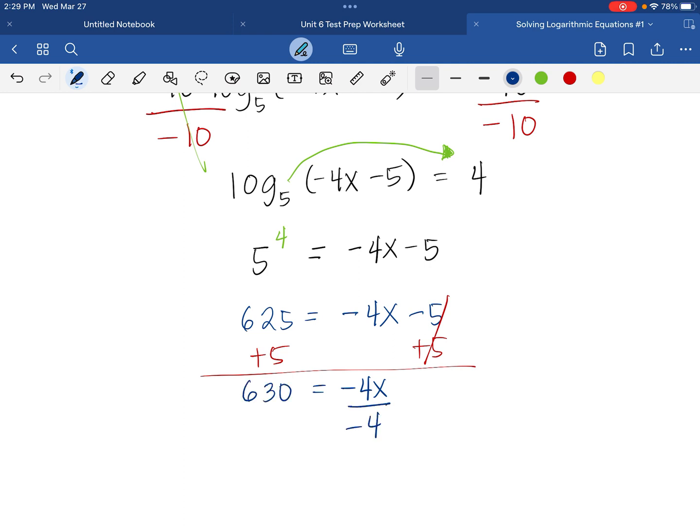Divide both sides by negative 4. And so this will give us an answer, which is x equals negative 315 divided by 2. There's the right answer.